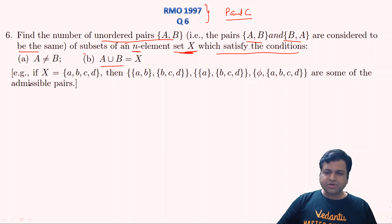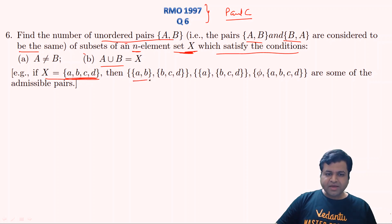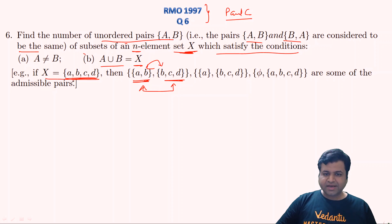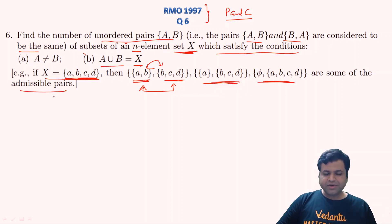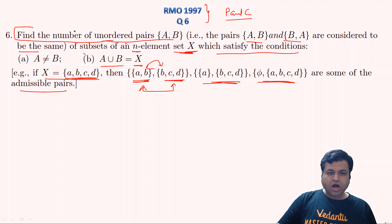For example, let X = {A, B, C, D}, a set of four elements. Then one admissible pair could be ({A, B}, {B, C, D}): here the first subset is clearly not equal to the second, and their union equals X. These are some of the admissible pairs, and we need to find the total number of such unordered pairs.